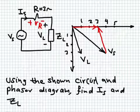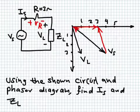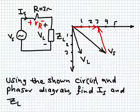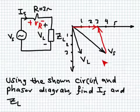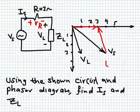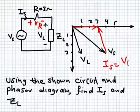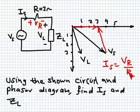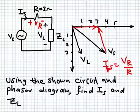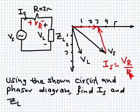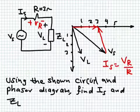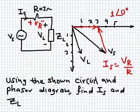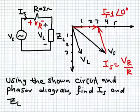From the phasor diagram, the resistor voltage phasor is 3∠0°. By Ohm's law, IS = VR / R = 3∠0° / 3 = 1∠0°. The voltage and current in a resistor are in phase, so the current is 1 ampere at an angle of zero degrees. We can write IS = 1 A ∠0°, found directly from the phasor diagram.